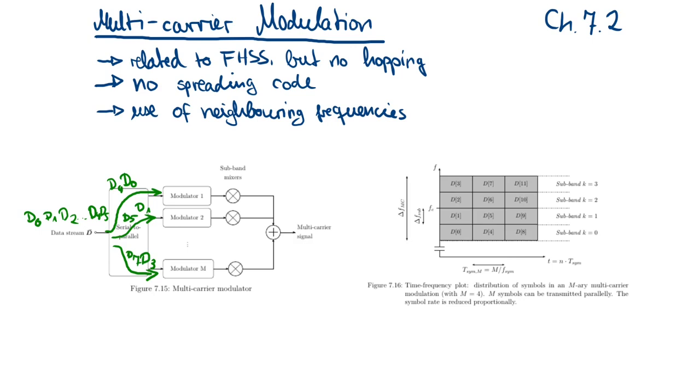Each symbol is then modulated onto a different carrier. In this example, we have four carriers, so every fourth symbol is modulated onto the first carrier, every fourth symbol on the second carrier here, and so on. You see that this scheme looks a bit like frequency hopping spread spectrum, but you don't see any hopping. This is a very regular scheme. It is not a hopping scheme, and therefore it does not provide us any processing gain.